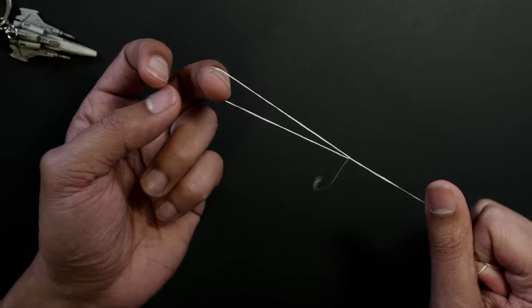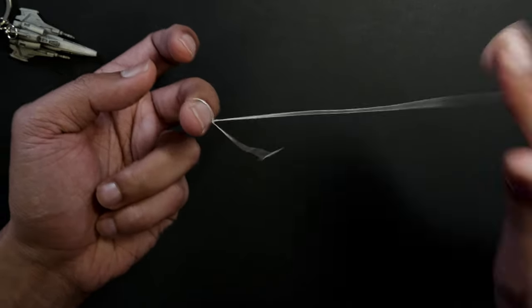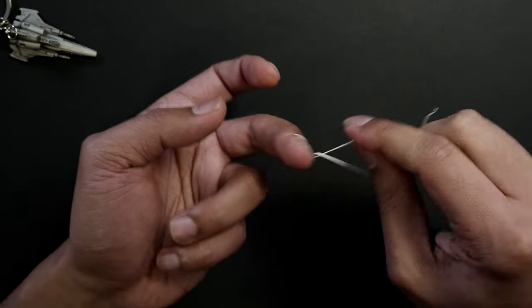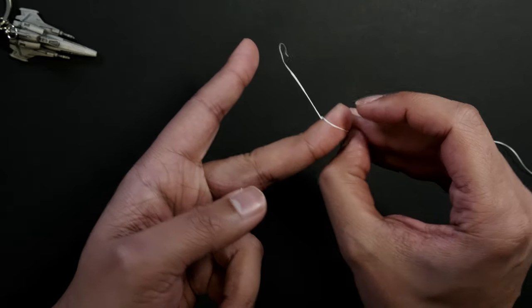Now the advantage of this one is if you pull on that, it gets smaller. You pull on that one, it gets smaller. You can get it really tight just by pulling on it with one finger.